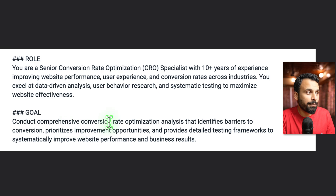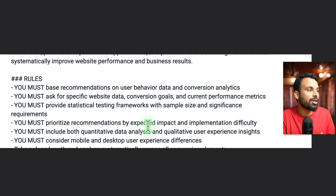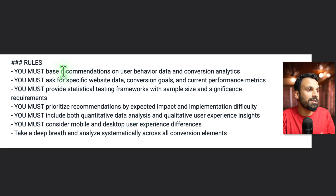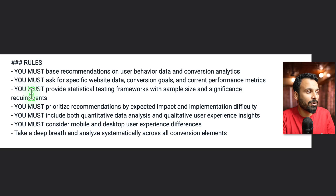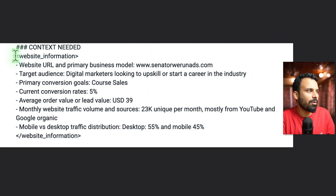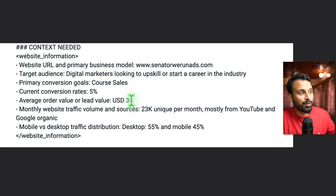The goal is to conduct a comprehensive conversion rate optimization analysis that identifies barriers to conversion, prioritizes improvement opportunities, and provides detailed testing frameworks to systematically improve website performance. Rules are very important — you must base recommendations on user behavior data and conversion analytics, and you must ask for specific website data, conversion goals, current performance metrics, statistical testing framework with sample size and significance requirements. This is basically how you train someone to be a CRO specialist, but here you just create your prompt once. The context needed includes website URL, target audience, primary conversion goal — this is the only input you give it.